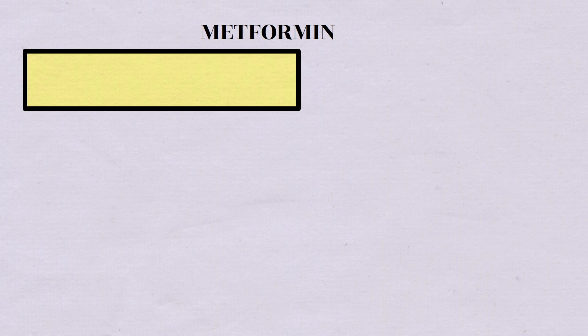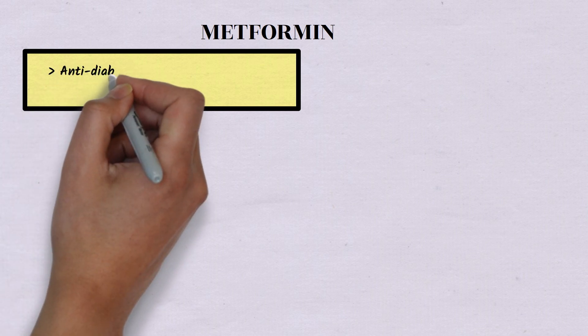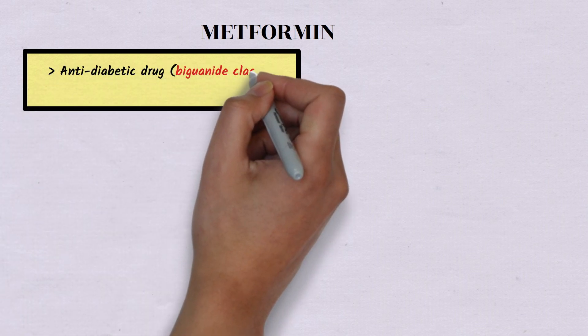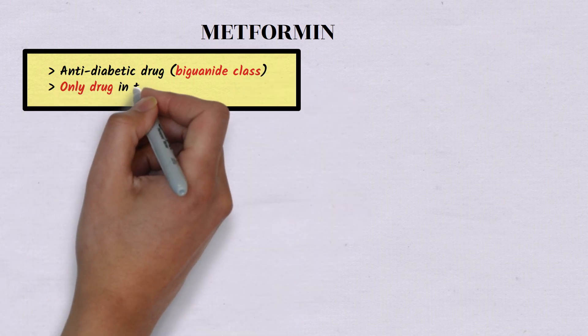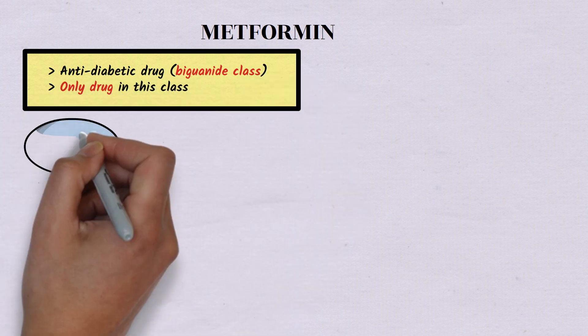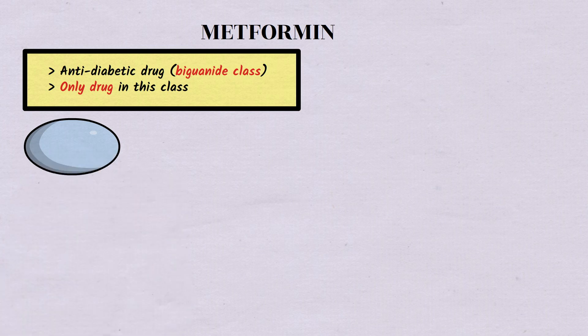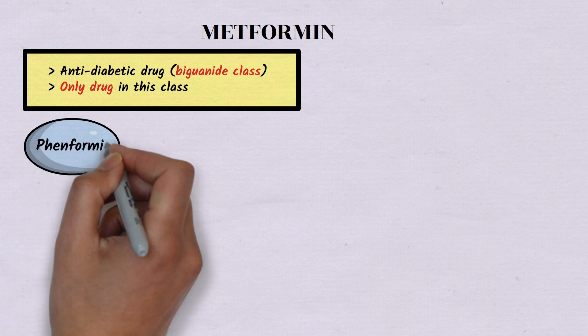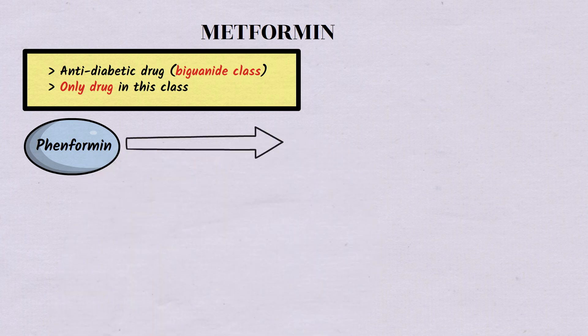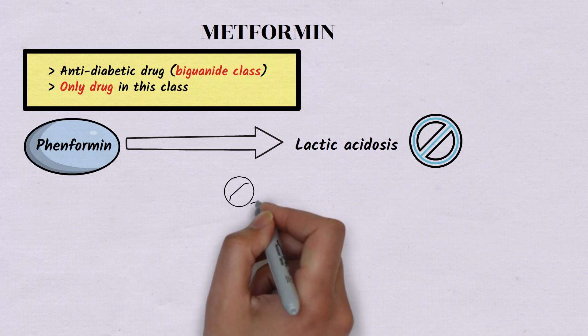In this video we will discuss about metformin. Metformin is an anti-diabetic drug belonging to the biguanide class. You should remember that metformin is the only drug currently available in this class. One more drug was available previously called fenformin; however, it was discontinued because of its strong association with lactic acidosis.